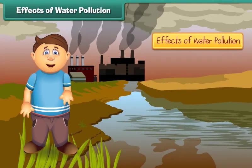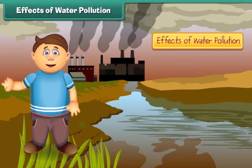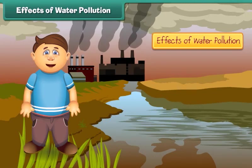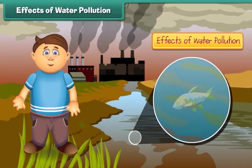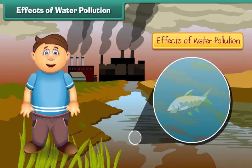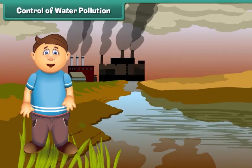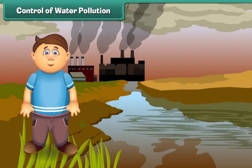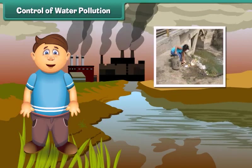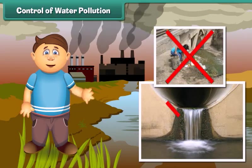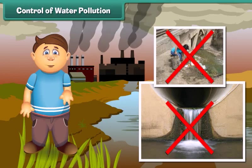What are the effects of water pollution? Poisonous chemicals released from factories and industries enter water bodies, due to which marine life is getting affected. If we consume such fish, we will also fall ill. To control water pollution, we should not dispose garbage and harmful chemicals directly into ponds, lakes and rivers.